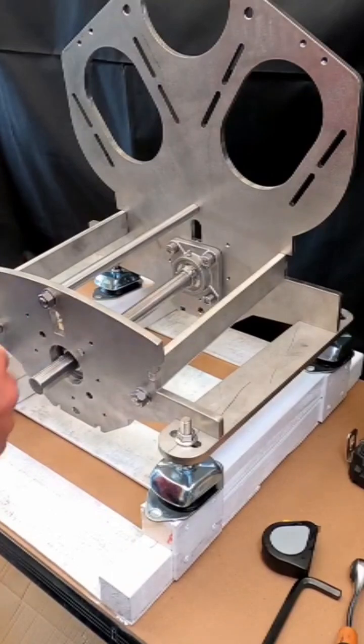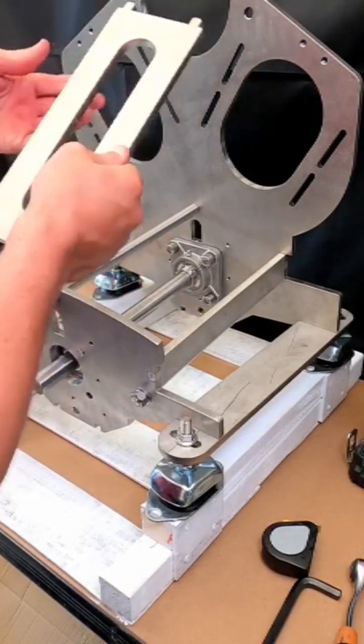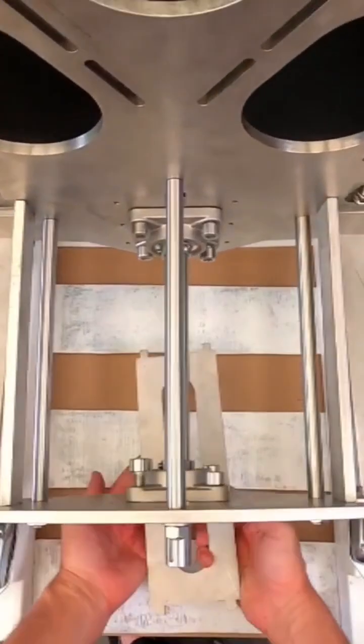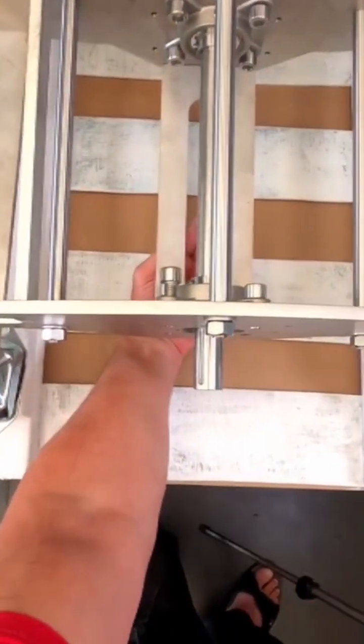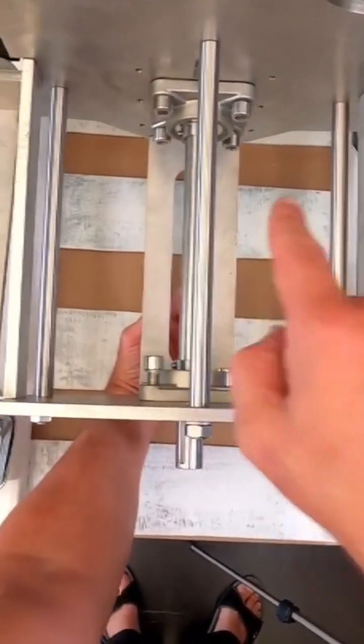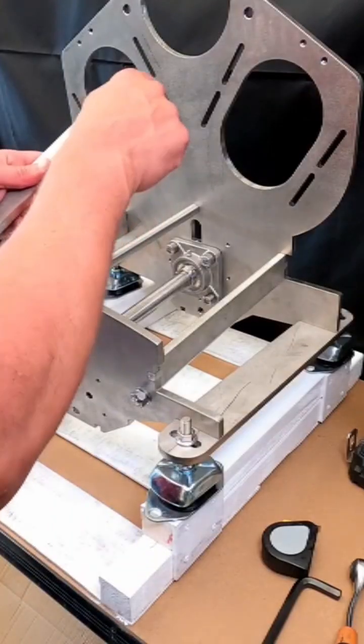And this is a part that supports underneath, so that goes in here like that. The idea is that it's going to be welded as well, so to help with alignment I put these little teeth in.